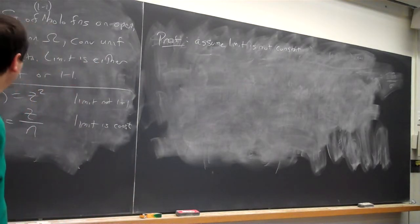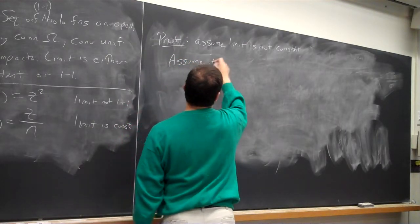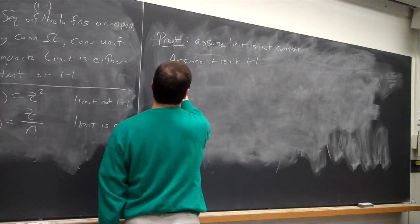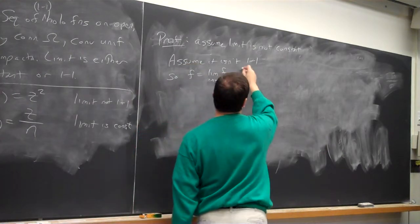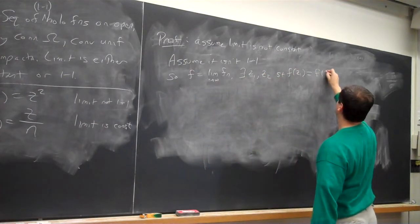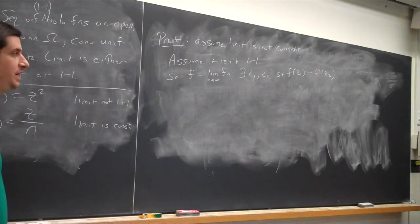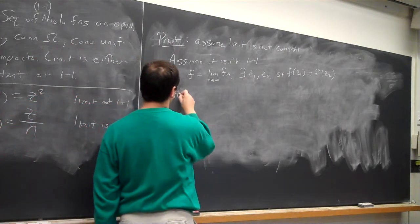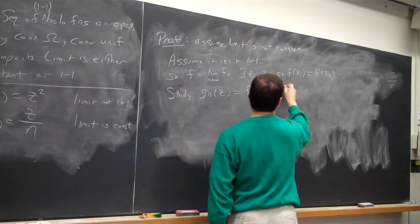So, the whole question is, we want to show that it's one to one. So, one way to go is to go by contradiction. Assume it isn't one to one. So, let's let f equal the limit as n goes to infinity of f_n. There exists z_1 and z_2, such that f of z_1 equals f of z_2. If it's not one to one, I have to have two points that get sent to the same thing.